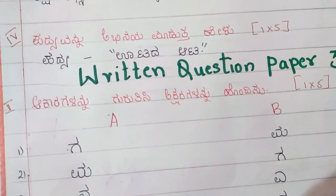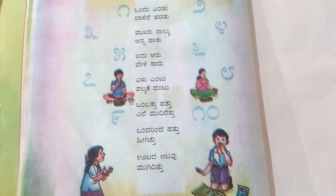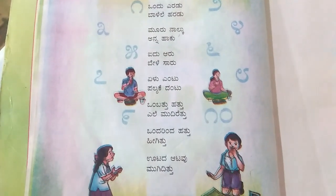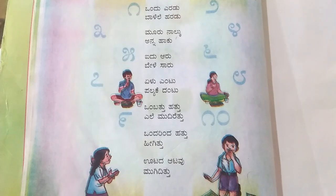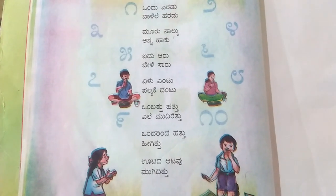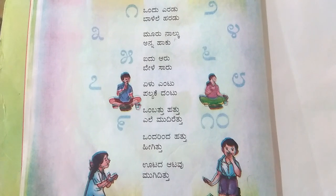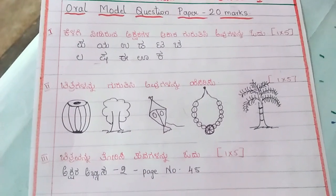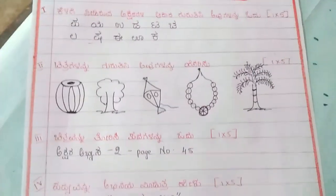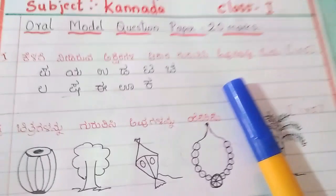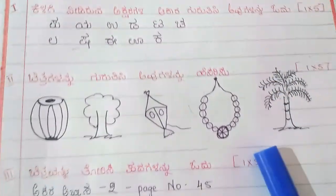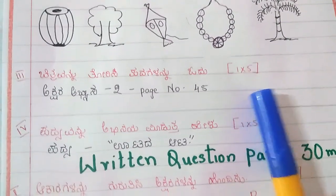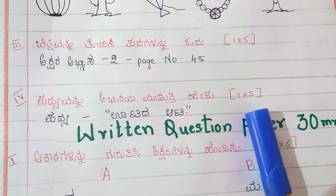This poem carries 5 marks. The child has to recite the poem, and marks are allotted based on correct pronunciation and action. This is for 5 marks. So in total, we have 20 marks for oral questions — the first question for 5 marks, the second for 5 marks, the third for 5 marks, and the fourth for 5 marks.